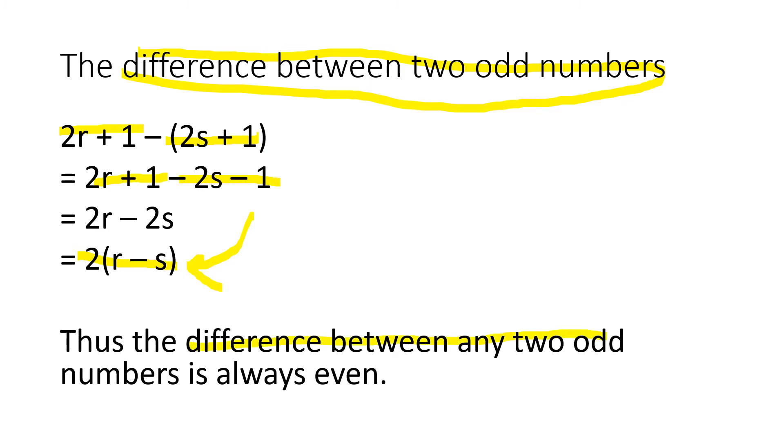Thus, we can say that the difference between two odd numbers is always even because it is a multiple of 2 here.